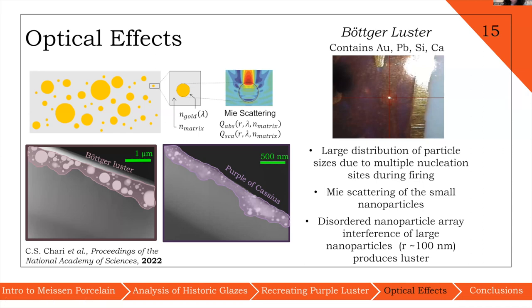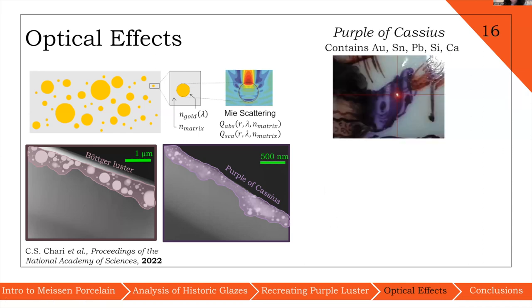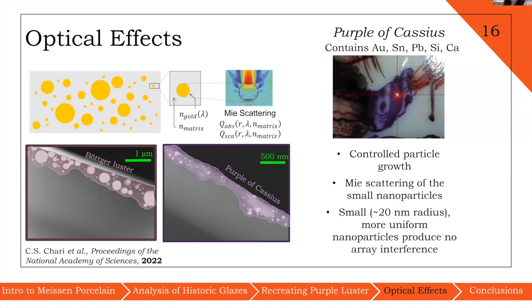Moving on to purple Cassius, we have controlled particle growth emerging from the presence of tin in the preparation of this glaze. As a result, we only have small nanoparticles that contribute to the Mie scattering that gives the glaze its purple color and a different tone also. Because we have this absence of the larger nanoparticle sizes, we don't see any array interference effects. And for that reason, purple Cassius is not lustrous, unlike Böttger luster.